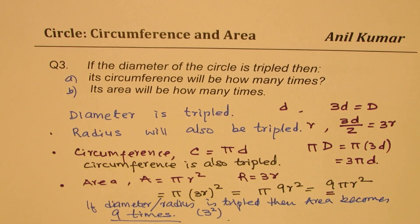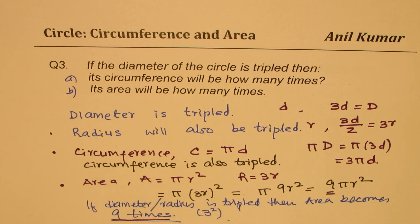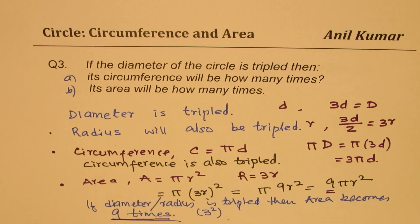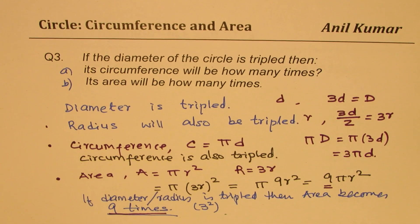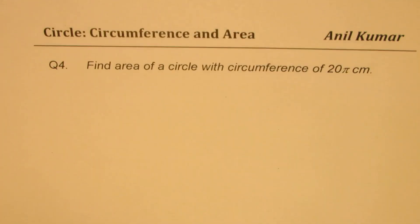Area involves a square, so it becomes 9 times. I hope that is very important to understand. Now, let's take up the next question, question number four.